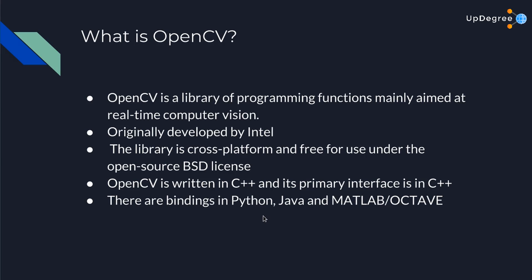OpenCV also supports the deep learning frameworks in vogue right now, such as TensorFlow, Torch, PyTorch, and Caffe. Officially, OpenCV was launched in 1999. It was initially an Intel research initiative to advance CPU-intensive applications, and it was part of a series of projects including ray tracing and 3D displays. The main contributors included optimization experts from Russia as well as Intel's own performance library team.